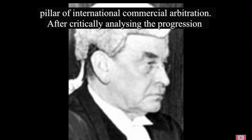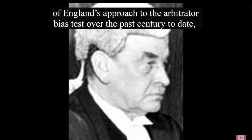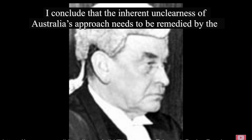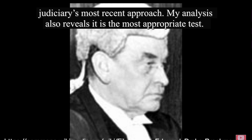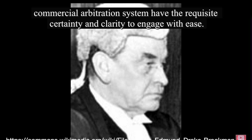After critically analysing the progression of England's approach to the Arbitrator Bias Test over the past century to date, I conclude that the inherent unclearness of Australia's approach needs to be remedied by the real possibility test being codified in Australian statute. This test reflects the Australian Federal Judiciary's most recent approach, and my analysis reveals it is the most appropriate test. By clarifying Australia's Arbitrator Bias Test, those associating with Australia's International Commercial Arbitration System have the requisite certainty and clarity to engage with ease.